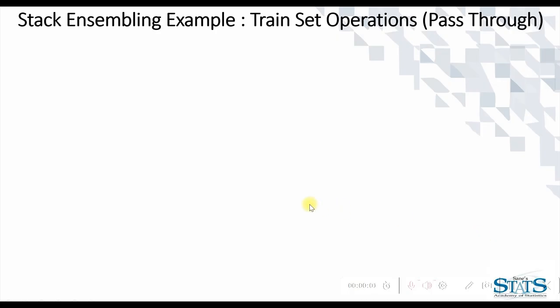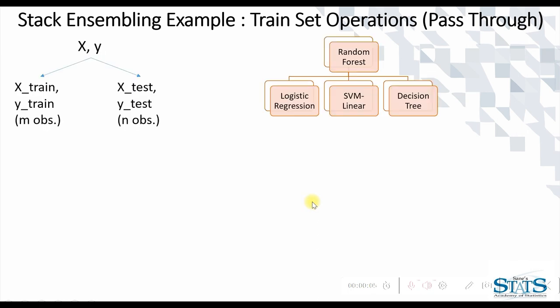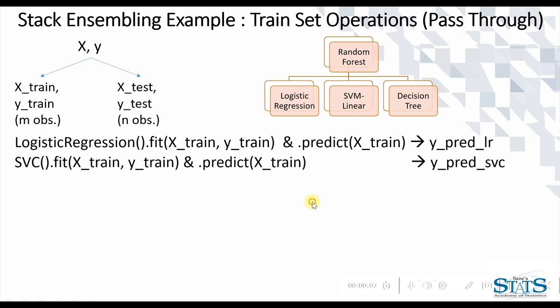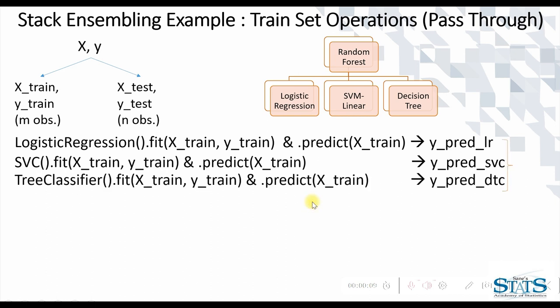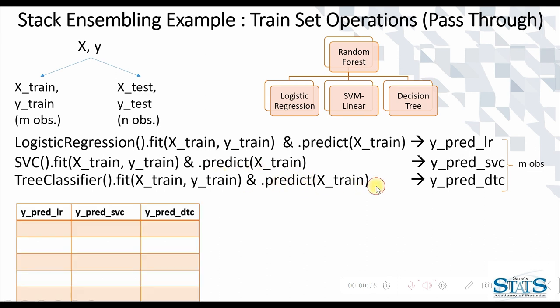As you see here, the process begins with train test split as usual with the selected models in the stack ensembling. We are going to take the same example as the earlier video. Now we saw that with the predictions in place, we concatenate them to form a data frame and we have called that data frame as xtrn_pred.